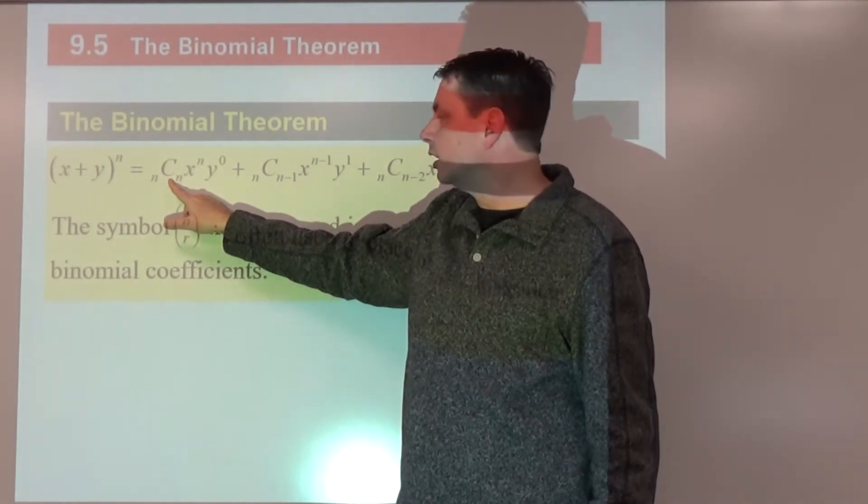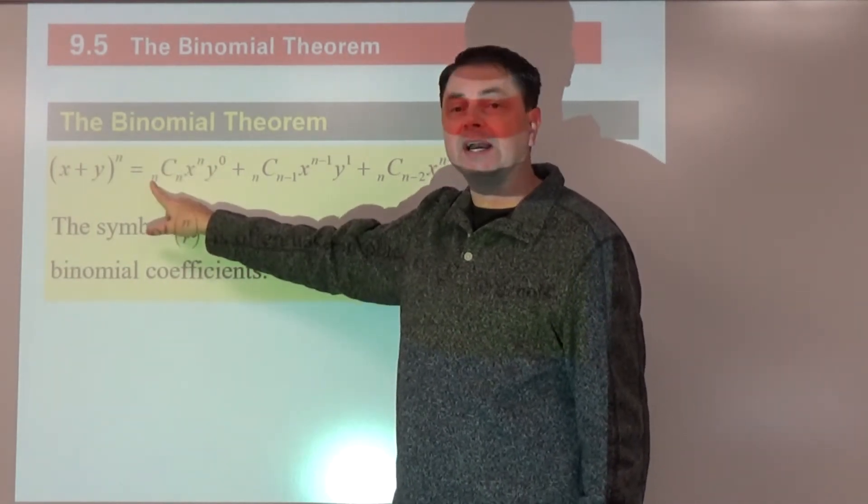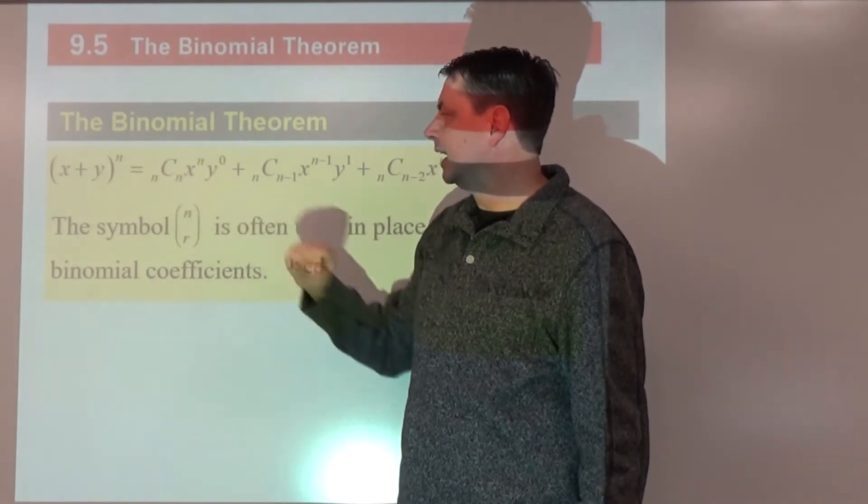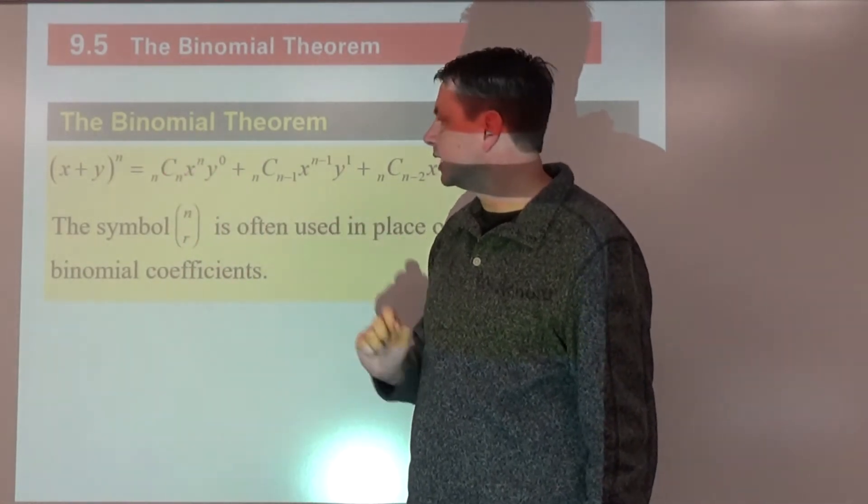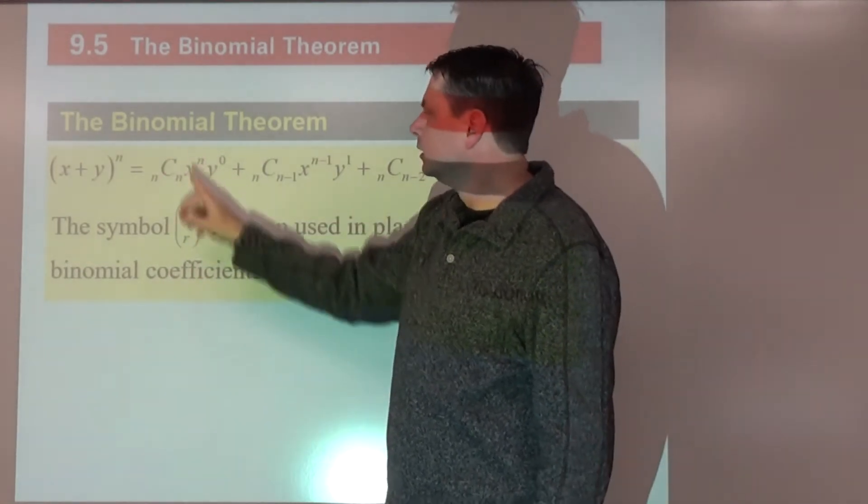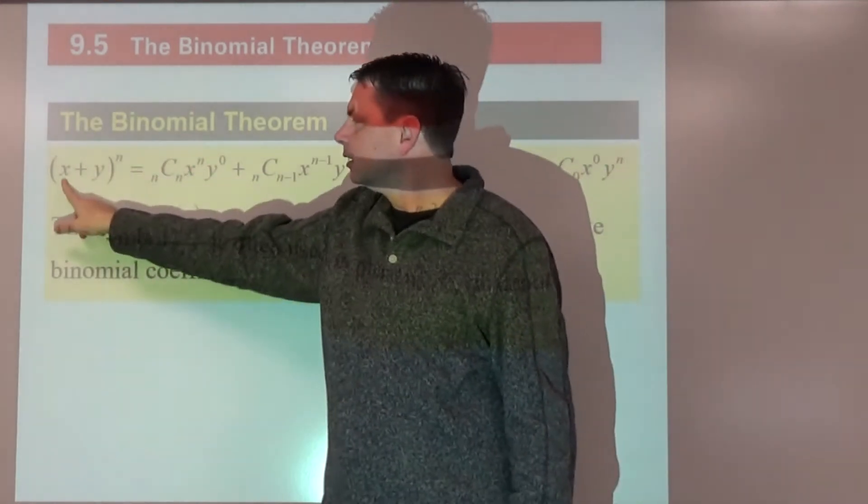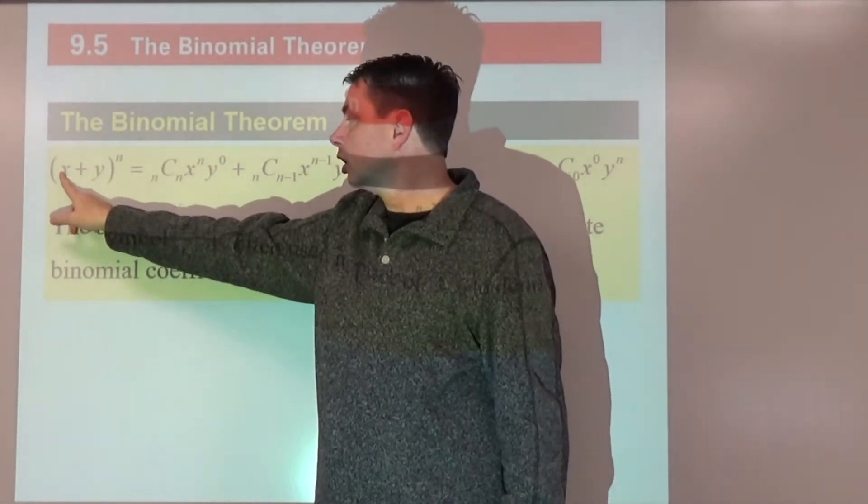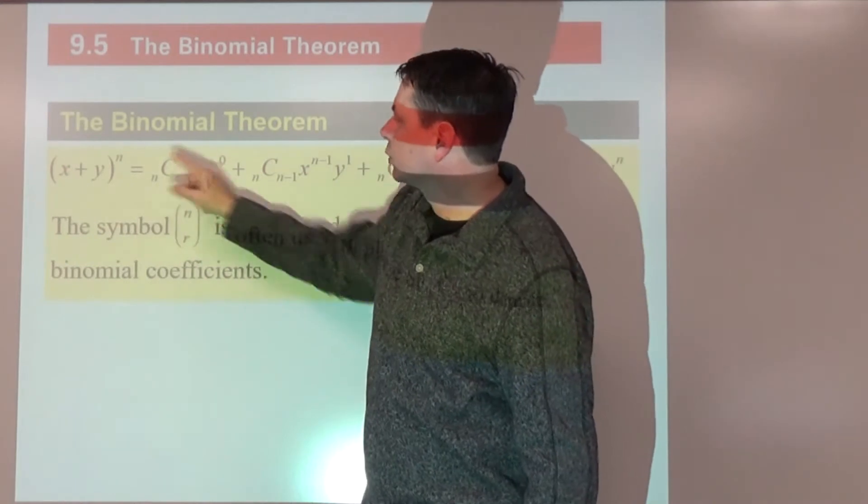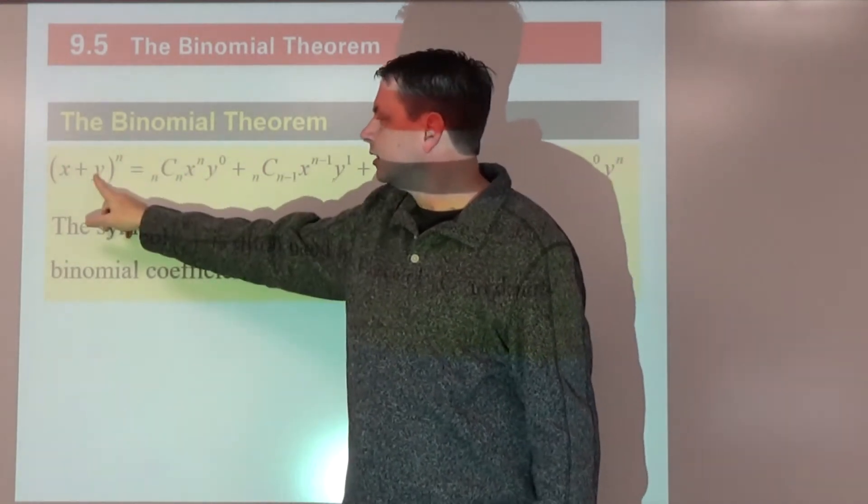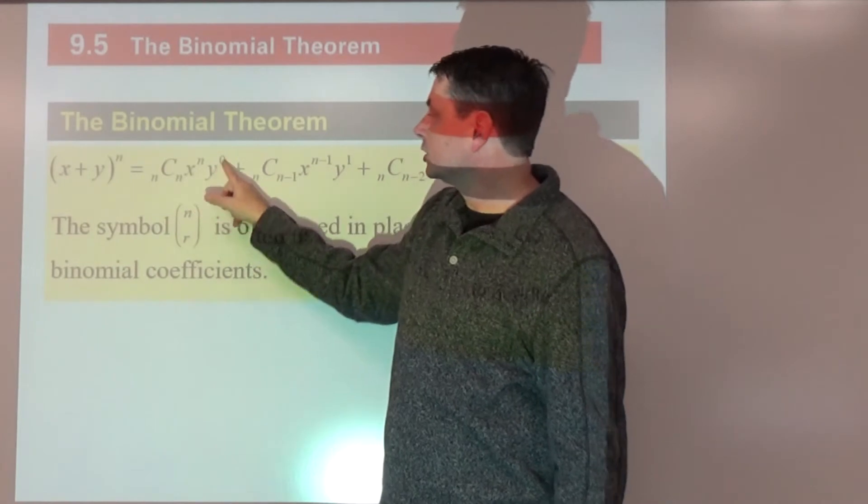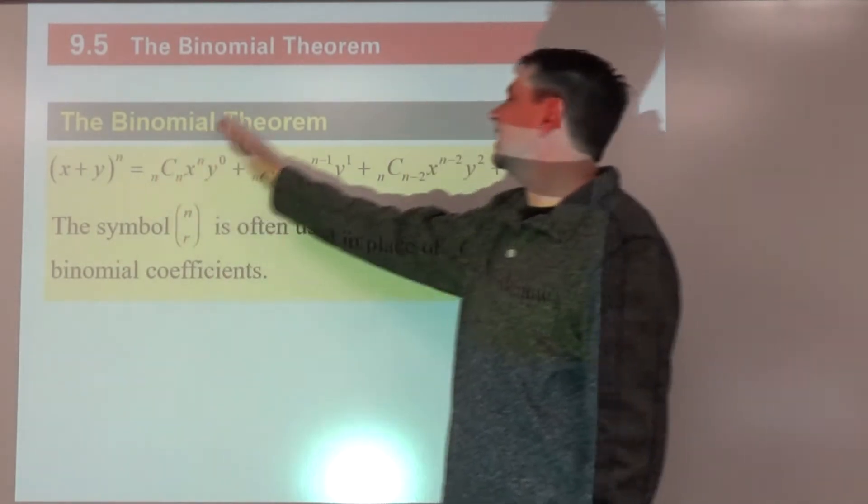Here it is: whatever the exponent is, we're going to take a combination of that many items choosing that many, n choose n, a combination. We'll see how to do that in a bit. And then the a part, the first term which we'll call the a part, gets raised to the power of n, and the b part, the second part, gets raised to the power of zero.